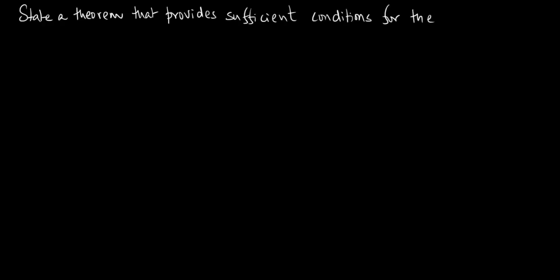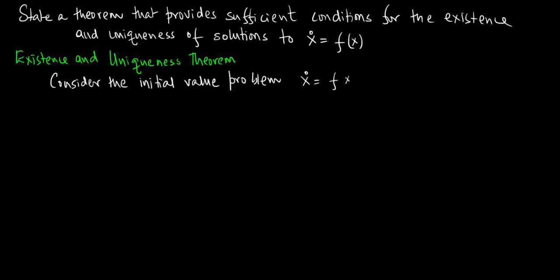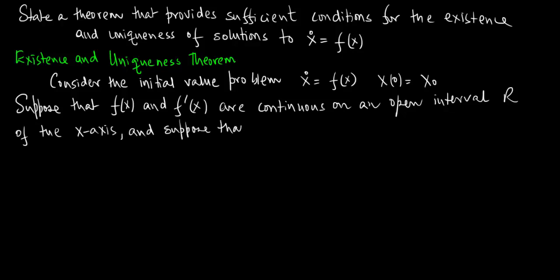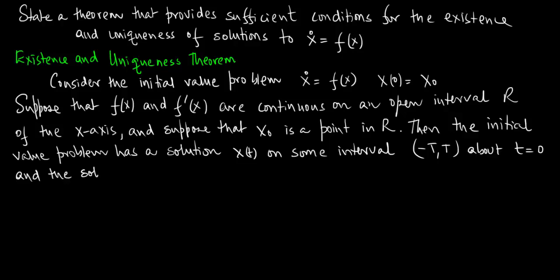Now let us go ahead and state a theorem that provides sufficient conditions for the existence and the uniqueness of solutions to x dot is equal to f of x. Consider the initial value problem x dot is equal to f of x where x of 0 is equal to x naught, and suppose that f of x and f prime of x are continuous on an open interval r of the x axis, and suppose that x naught is a point in r. Then the initial value problem has a solution x of t on some interval minus t to t about t is equal to 0, and the solution is unique.